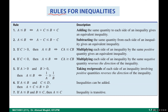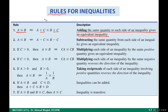If you have a less than b, this is equivalent to a plus c less than b plus c. Adding the same quantity to each side of an inequality gives an equivalent inequality. Similarly when you subtract from both sides.